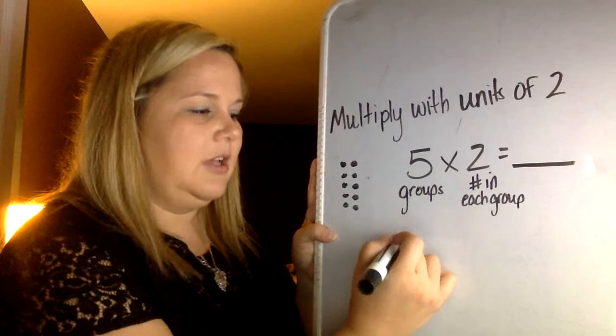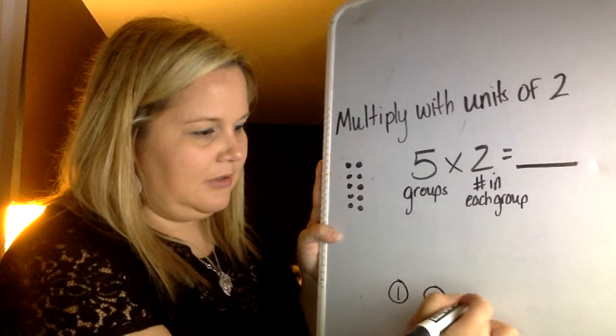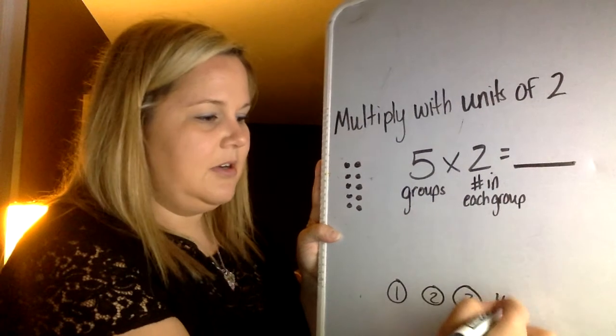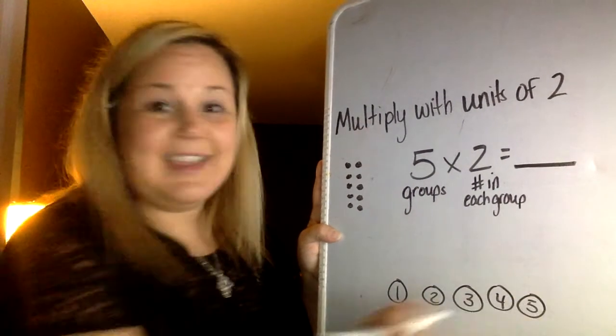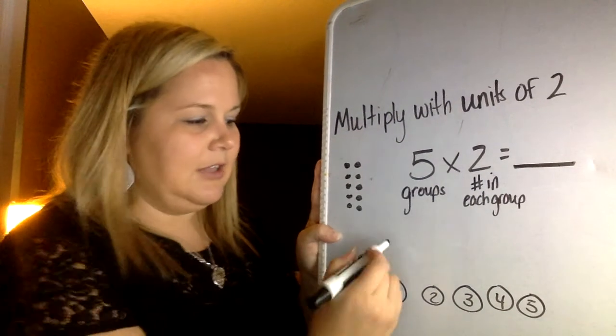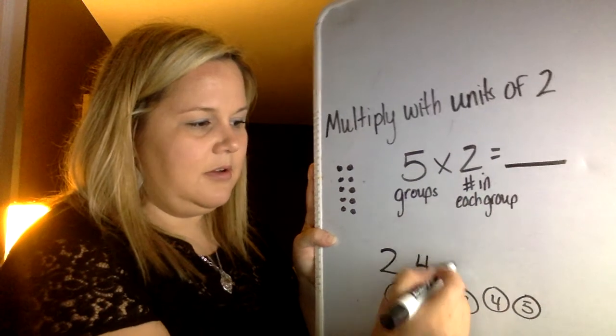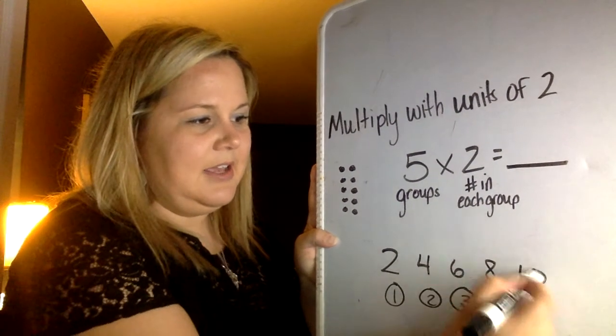Ready? So we're going to count by 2s. We're only going to go 5 times. So think about it as I want to go 1 time, 2 times, 3 times, 4 times, and then 5 times. Once I count 2 five times, I'm done because that's my problem, 5 times 2. So here we go. Ready? 2, 4, 6, 8, 10.